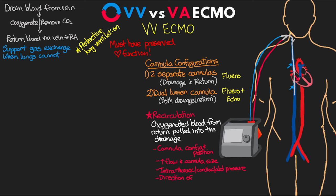The direction of ECMO flow can also impact recirculation. In the two-cannula configuration, draining from the inferior vena cava and returning to the superior vena cava and right atrium results in less recirculation and is our preferred cannulation strategy. Dual lumen cannulas do show a marked decrease in recirculation, though it can still occur — usually related to malposition. We identify recirculation by trending our pre-oxygenator saturation and the patient's arterial oxygen saturation; an increasing pre with a decreasing arterial saturation could indicate recirculation.